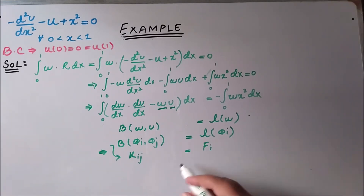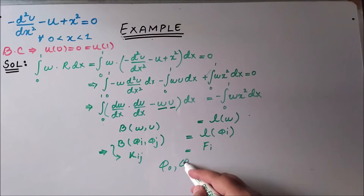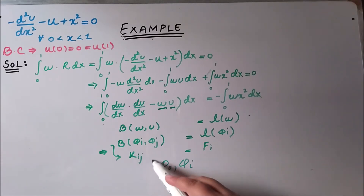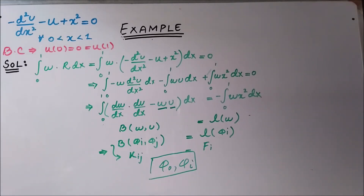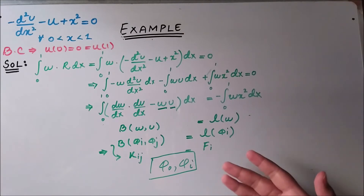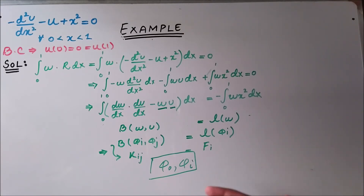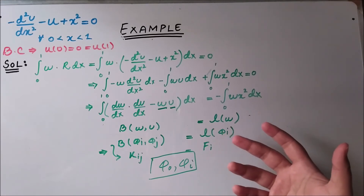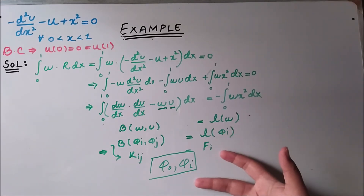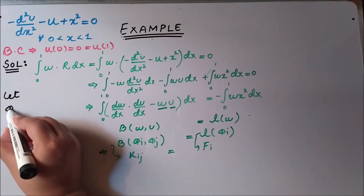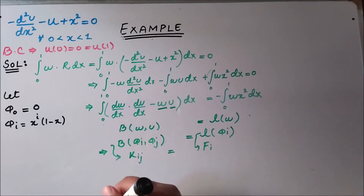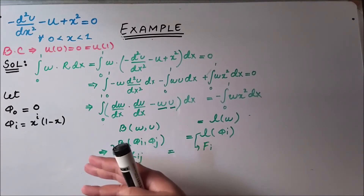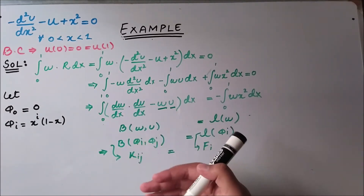Now we have to assume what the shape functions should be according to the conditions, as discussed in previous videos. The selection of shape functions is not unique, so you may end up with different shape functions. As long as they fulfill their conditions, we are good. Let phi_0 equal 0 and phi_i equal x^i times (1 − x). I leave it to you to verify that these functions fulfill their requirements.